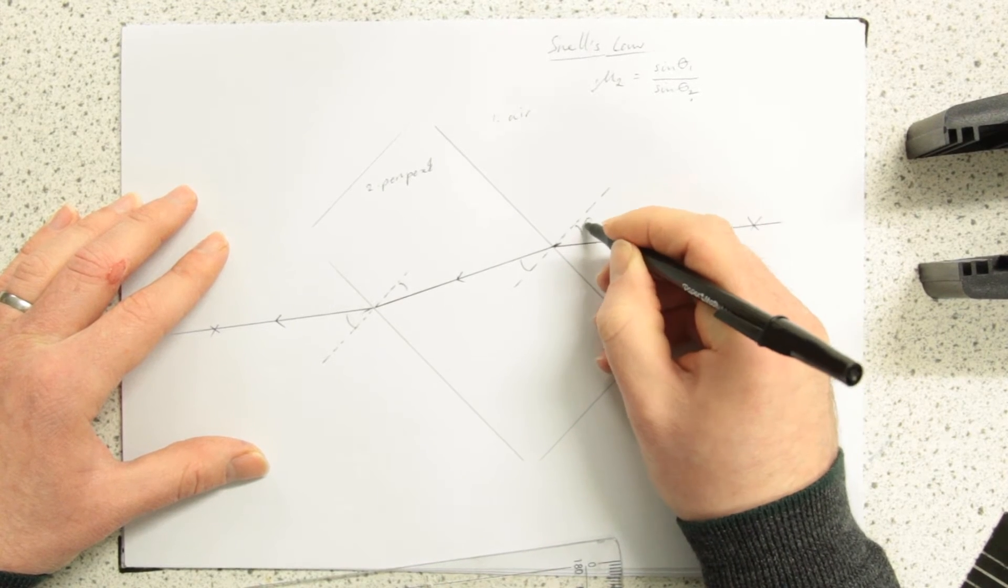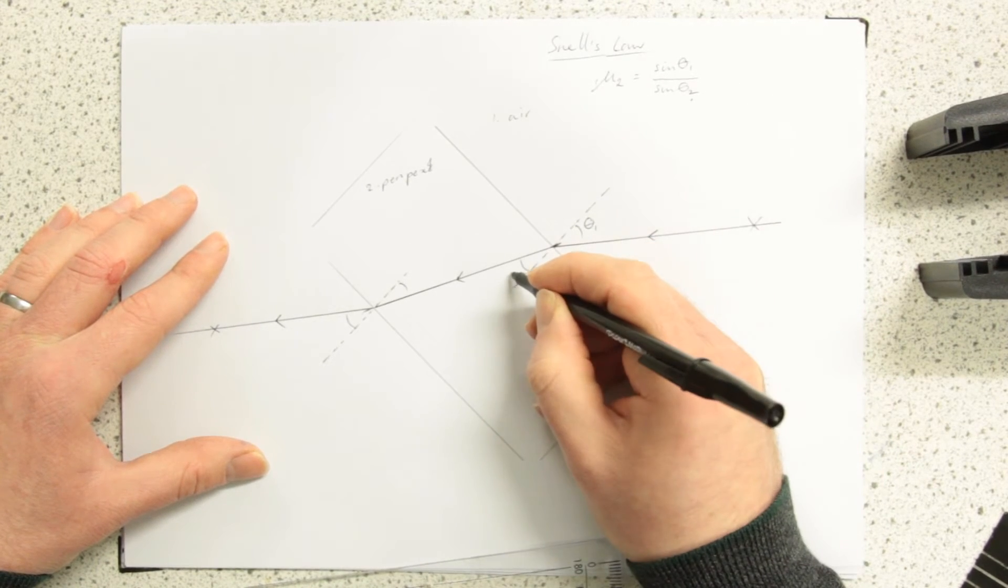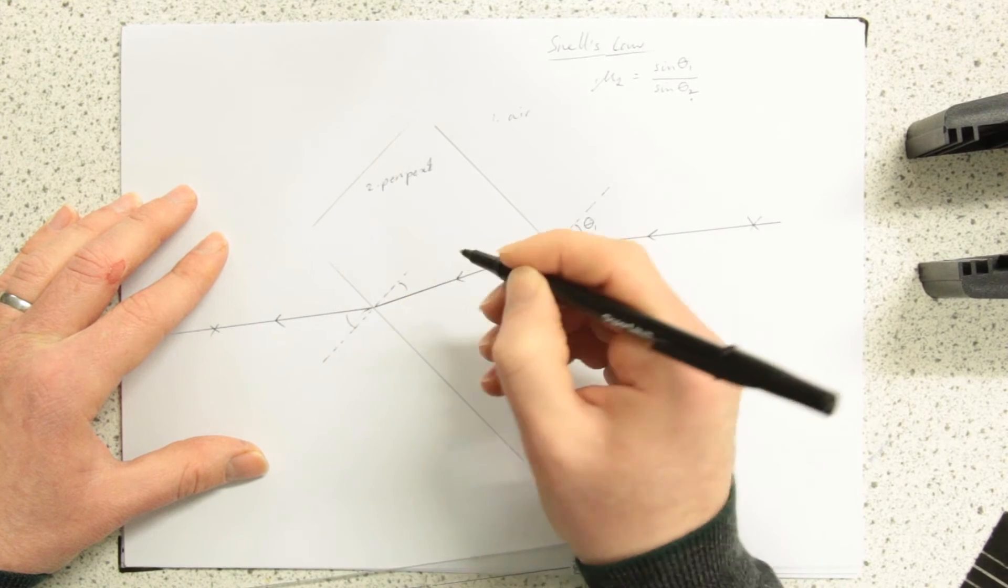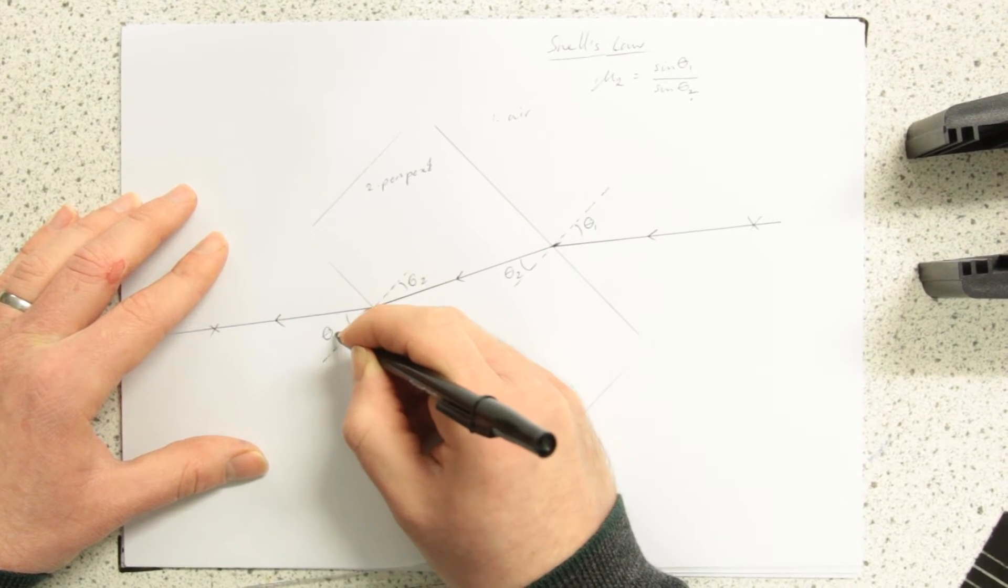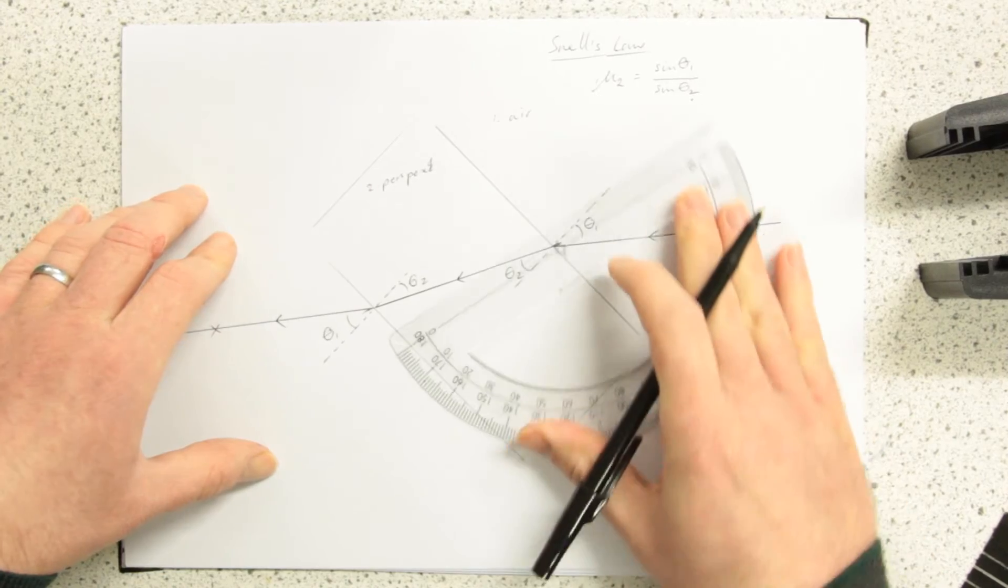So in this case, well this is our angle of incidence we would call it, or angle one, that's angle two, that's angle two there inside, that's angle one there. Measure them up.